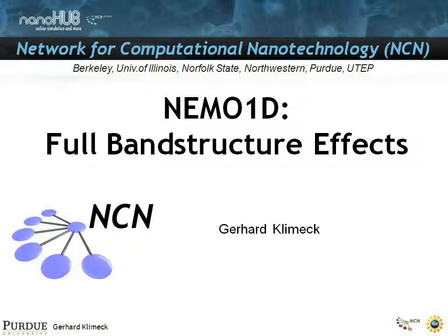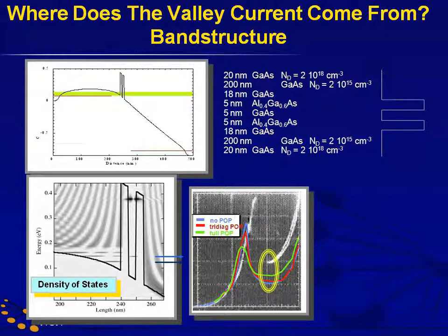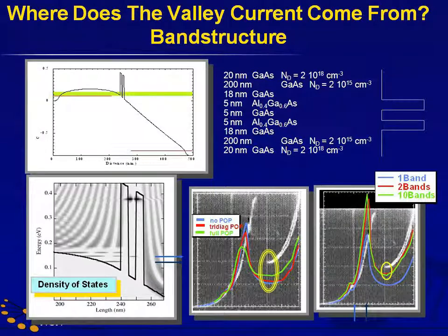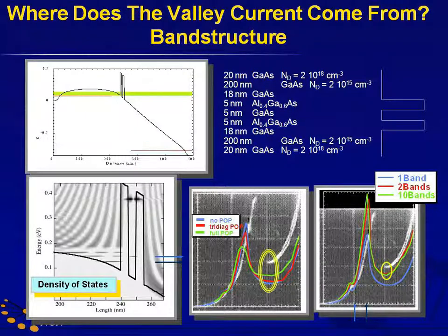Alright, so now we're going to talk about full band structure effects in NEMO 1D. In the previous lecture you saw that scattering wasn't quite doing the job of getting us closer to the valley current and to the turn on. There was an indication that if you take a 10 band model or even a 2 band model, you get closer. So let me walk you through the physical effects of why that is.